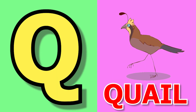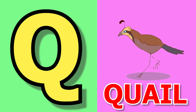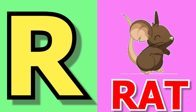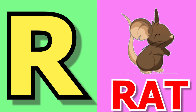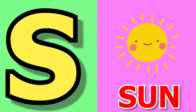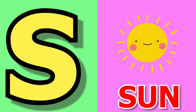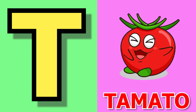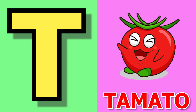Q for quill, quill means quill. R for red, red means suha. S for sun, sun means surya. T for tomato, tomato means tomato.